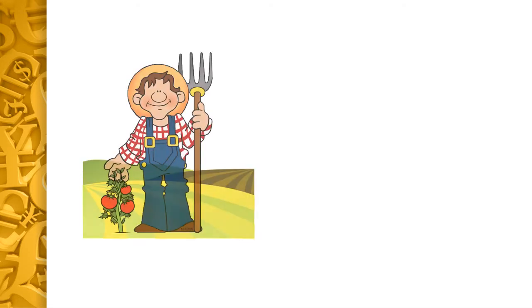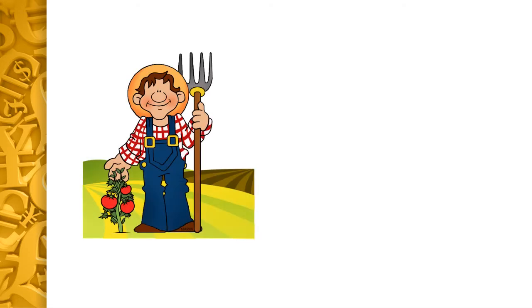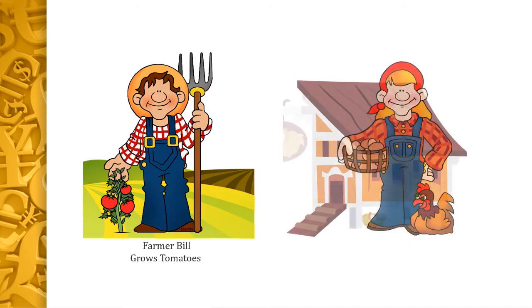Let's take a closer look at this with two main characters for this lecture. We have Farmer Bill, who grows wonderful tomato plants, and Farmer Nancy, who raises eggs. At first, Farmer Bill is very happy with his tomatoes and eats lots of tomato soup, while Farmer Nancy loves scrambled eggs and is fine eating those.